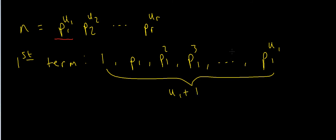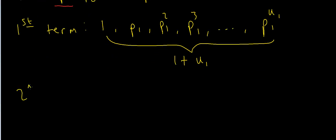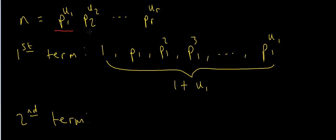The total number of terms for the first prime is 1+u1. Now how about the second term? How many choices do I have for what the second value could be? Since we have p2^u2, the second term could be 1 if the prime doesn't appear in the factorisation, or p2, or p2 squared.